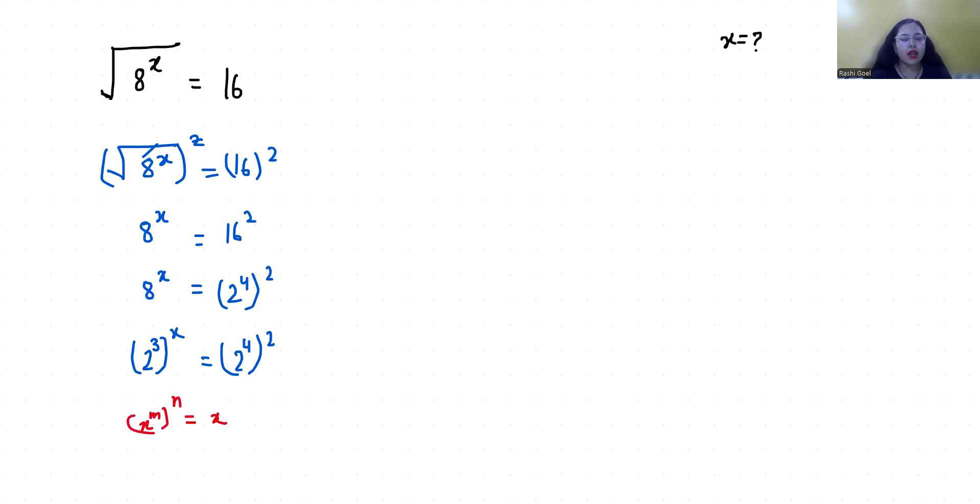Now if we compare both sides, if the bases are equal their powers are also equal. So 3x equals 8, and x equals 8 by 3.